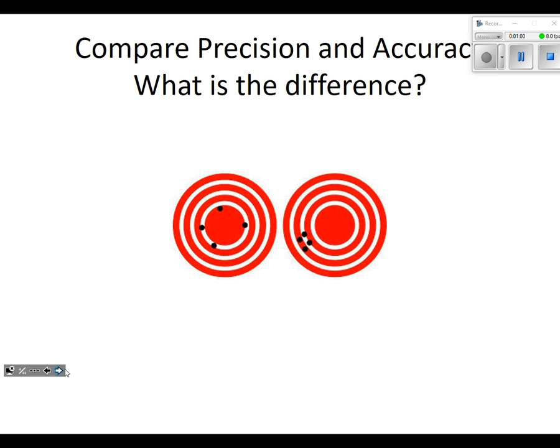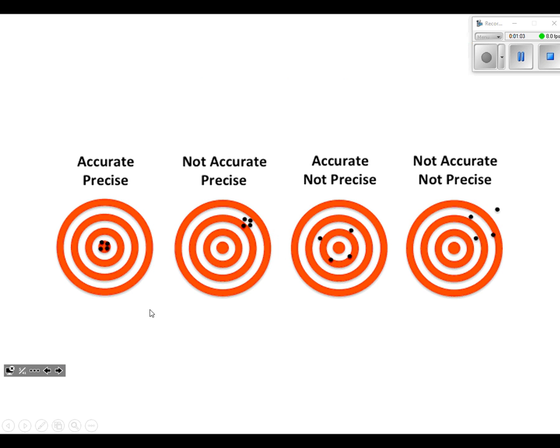We looked at different targets. I would fully expect this kind of question to be on a test, wink wink, hint hint. I would probably give you the targets and you would tell me which one is which. This is accurate and precise because they're where they're supposed to be and they're all really close together. This is not accurate but it is precise because they're all nice and close together. This is accurate, not precise because they're kind of in the center. This is neither, although I would put them farther apart if I was drawing.